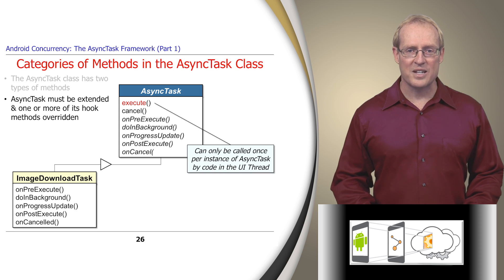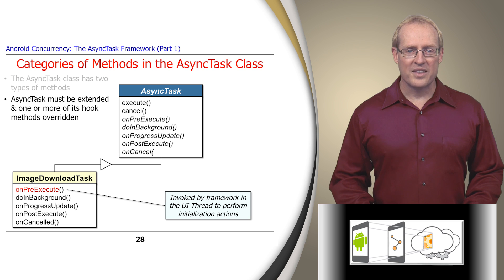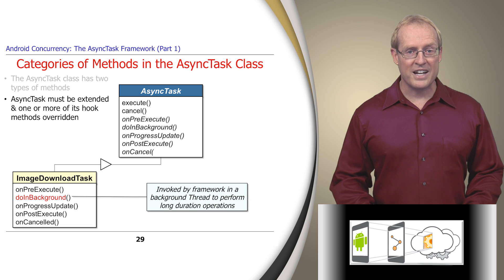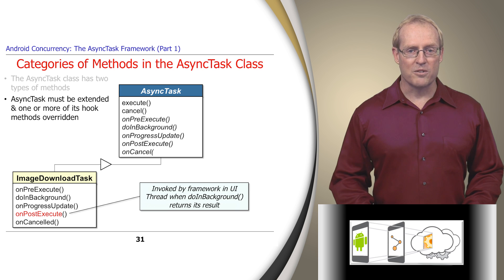Execute can only be called once on an instance of async task by code running in the user interface thread. Execute is implemented as a template method, which collaborates with other parts of the async task framework to run its hook methods at the appropriate time and context. After execute is called, the framework invokes onPreExecute in the user interface thread, which can perform initialization activities such as displaying a progress dialog. The framework next calls doInBackground in a background thread, where long duration operations can run without blocking the user interface thread. As long as doInBackground is running, it can call publishProgress to publish updates on the user interface thread via onProgressUpdate. When doInBackground completes, it returns a result, which the framework delivers as a parameter to onPostExecute, which can display results in the user interface thread.